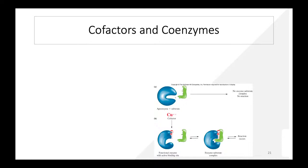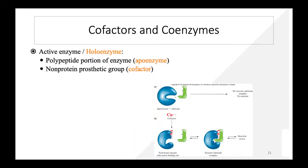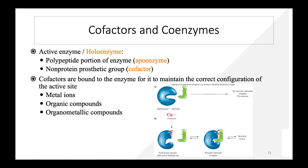Regarding cofactors and coenzymes: the holoenzyme has two components — apoenzyme (polypeptide portion) and cofactor (non-protein part, or prosthetic group). The apoenzyme without a cofactor is not active; no enzyme-substrate complex can form. Once the cofactor — for example, copper — is present, a functional active binding site exists, substrate can attach, and the reaction proceeds. Cofactors maintain the correct configuration of the active site and can be metal ions, organic compounds, or organometallic compounds.